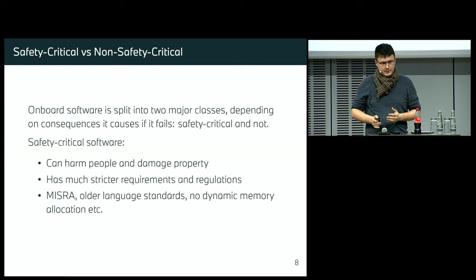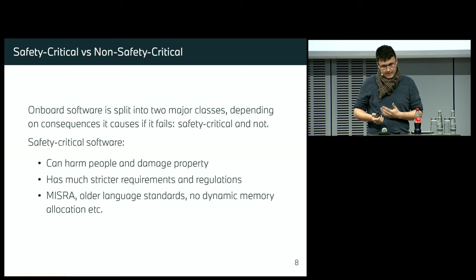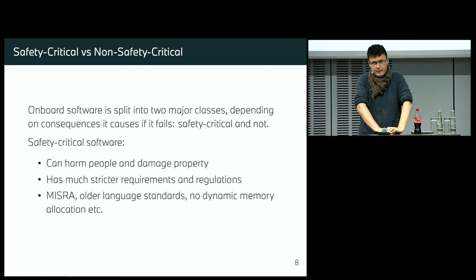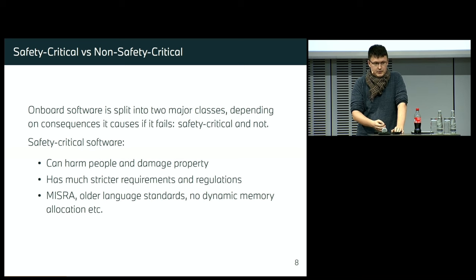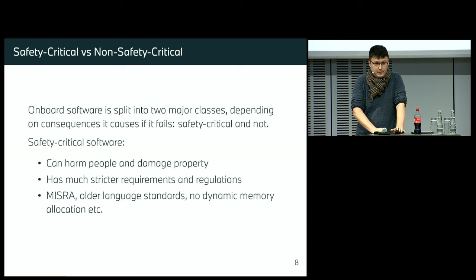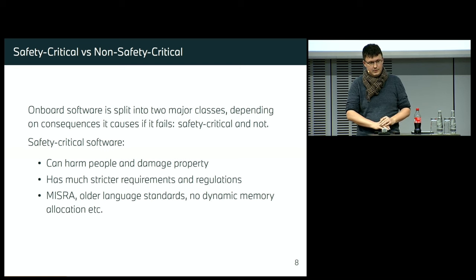All of this software can be split into two major classes: safety-critical and non-safety-critical. For safety-critical software, if it fails, misbehaves, or does something wrong, it can harm you, kill you, damage a car, or damage property — the consequences of failure are very bad. These systems usually comply with stricter regulations like the MISRA standard. They also tend to use older language standards like C++11, maybe 14, maybe 17 now, but the tendency is they lag behind the outer world.